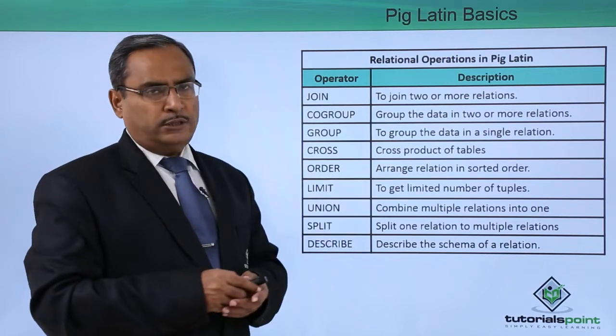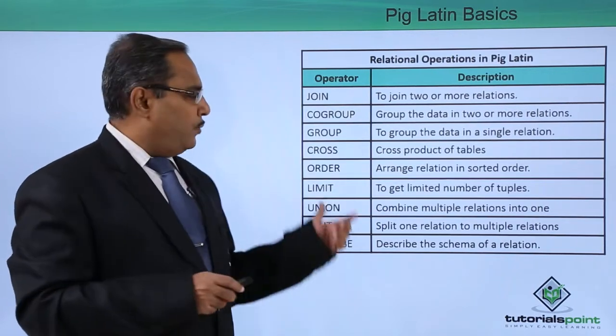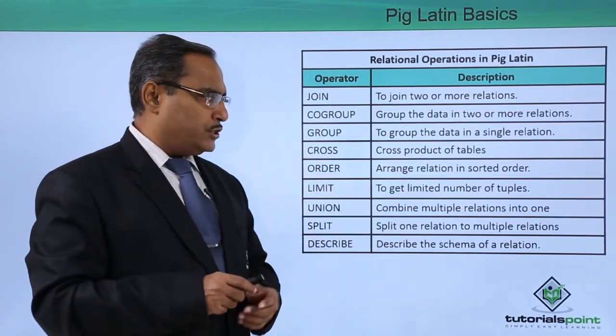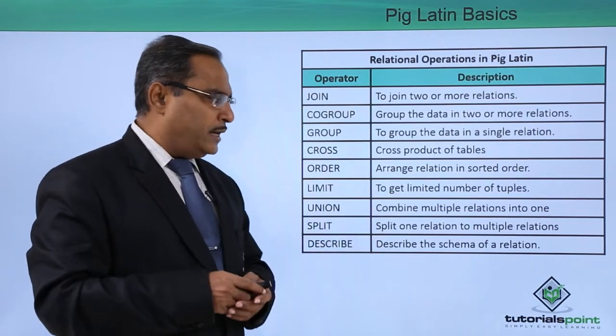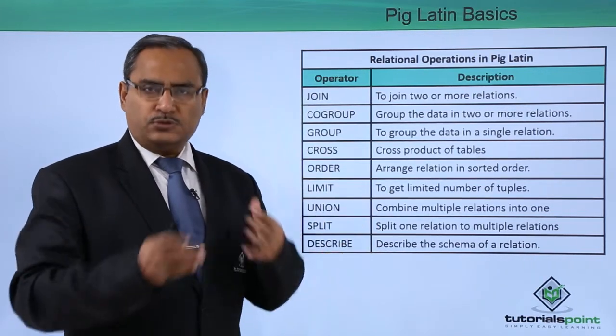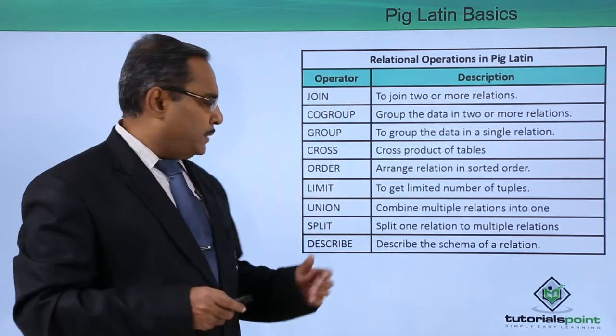We have CROSS, which performs a cross product between tables. We have ORDER, which arranges relations in sorted order. We have LIMIT, which gets a limited number of tuples, not all tuples.